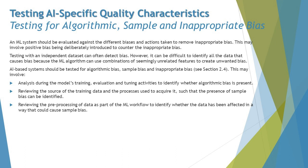This may involve positive bias being deliberately introduced to counter inappropriate bias. Testing with an independent data set can often detect biases, because when you use the same data used for training it may reflect precise and appropriate results, but as soon as you change the data compared to the training data sets it may reveal real biases. It can be difficult to identify all data that can cause bias because the ML algorithm can use combinations of seemingly unrelated features to create unwanted biases.